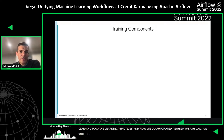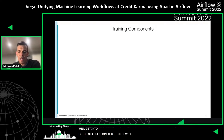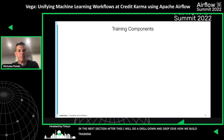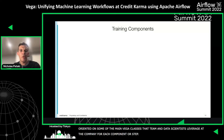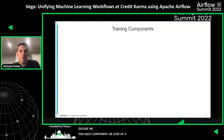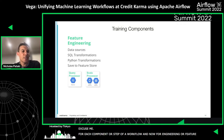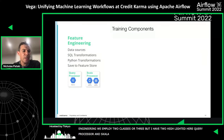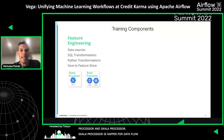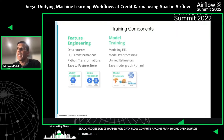In the next section I'll do a deep dive on how we build training data. But first, I want to help everyone get oriented on some of the main Vega classes that the team and data scientists leverage for each component or step of a workflow. For feature engineering, we employ two classes: Query Processor and Scala Processor. QP is a wrapper for BigQuery compute, and Scala Processor is a wrapper for Dataflow compute, which leverages the Apache Beam framework — another open source standard — that allows people to write in Scala or Java for model training.